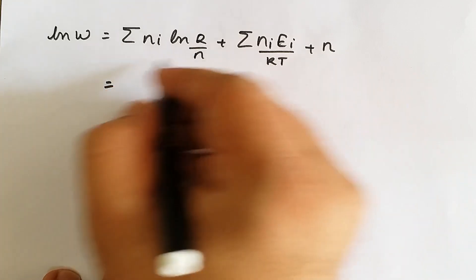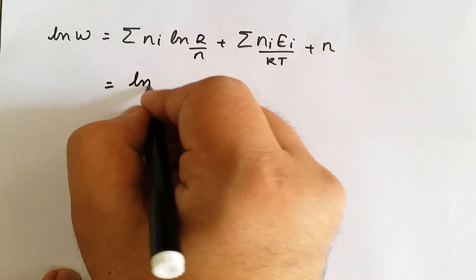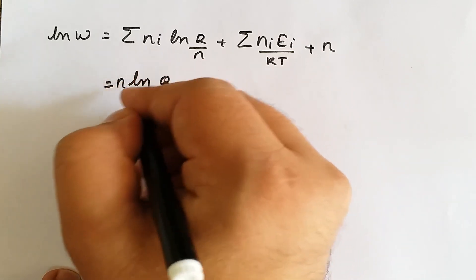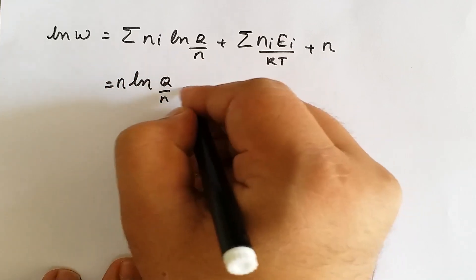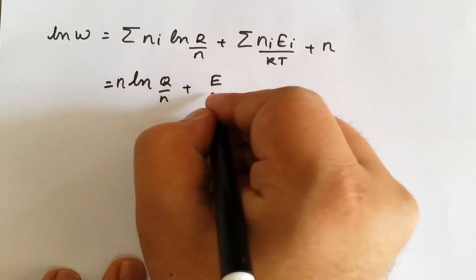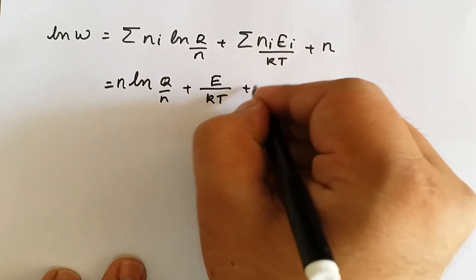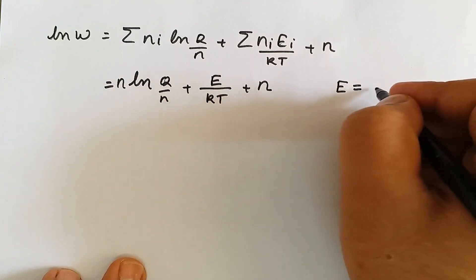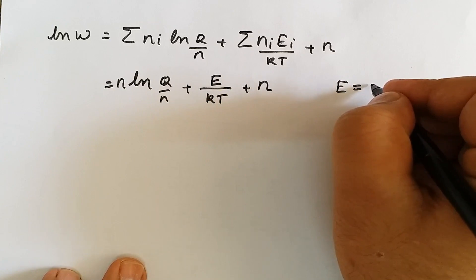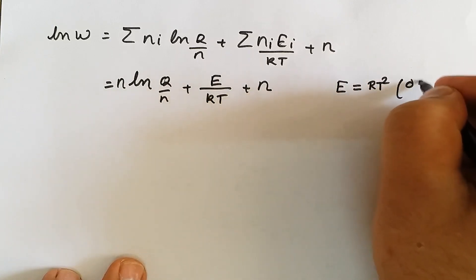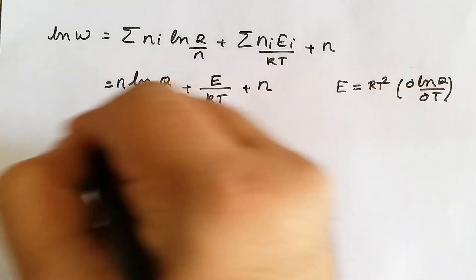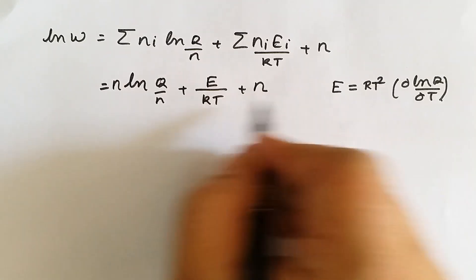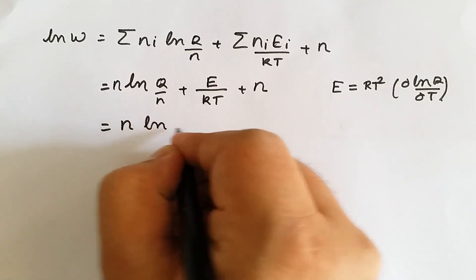Since ln(Q/N) is a constant term, summation of Ni·ln(Q/N) equals N·ln(Q/N). Also, summation of Ni·Ei equals E, the total internal energy. So ln(W) equals N·ln(Q/N) plus E upon kT plus N. We already found the representation of internal energy in terms of partition function: E equals RT squared times d(ln Q)/dT.